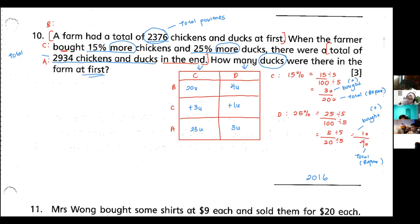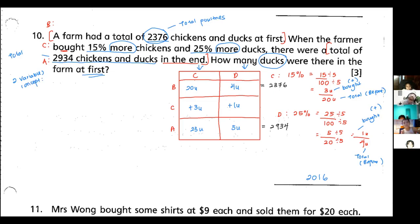Now we input the totals from the question. The total Before is 2376, and the total After is 2934. We now have two sets of information: 20 units of chicken + 4 units of duck = 2376, and 23 units of chicken + 5 units of duck = 2934. Because we have two sets, we cannot use just the table — we need the two-variable concept.